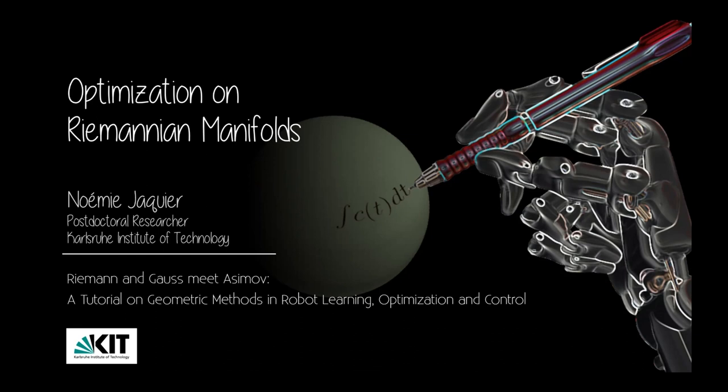For this afternoon session we have four talks. The first one is a postdoctoral researcher at KIT in the lab of Tamim Asfour, and she's going to talk about optimization on Riemannian manifolds. Welcome back everybody — in this session I'm going to talk about optimization on Riemannian manifolds.